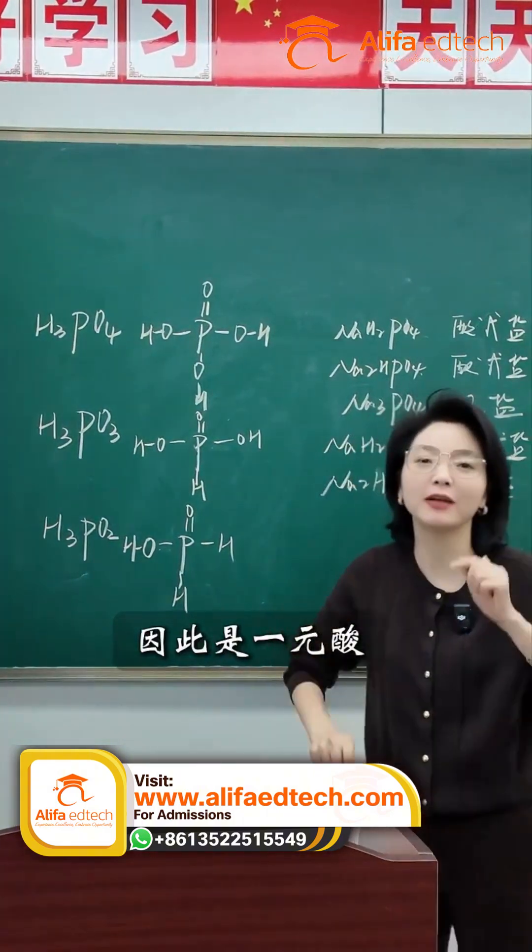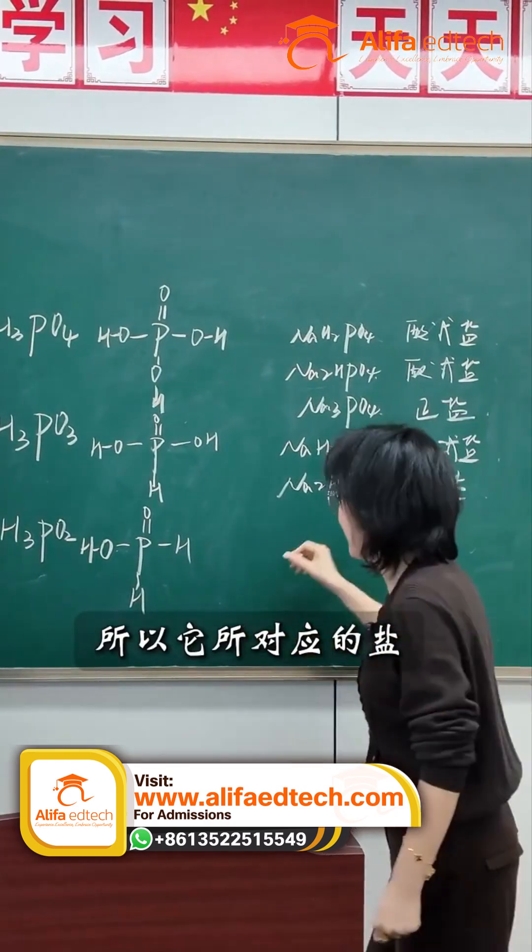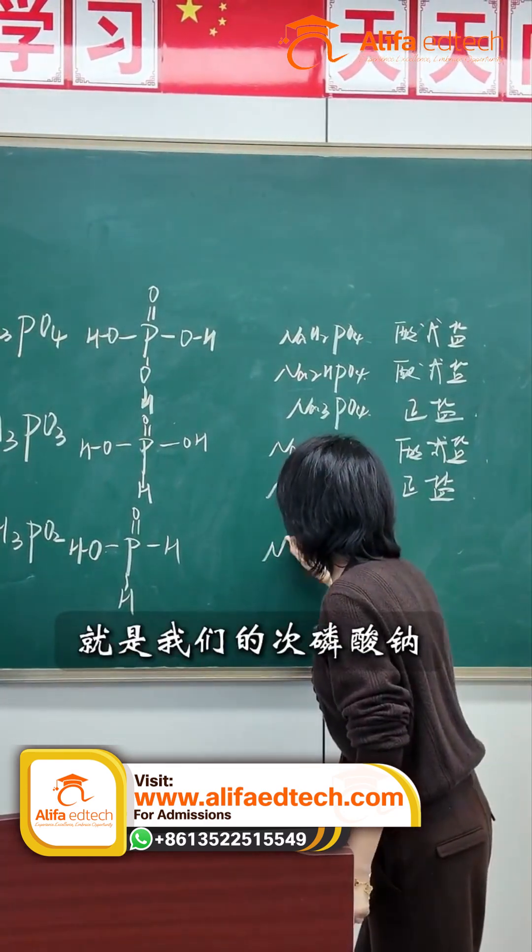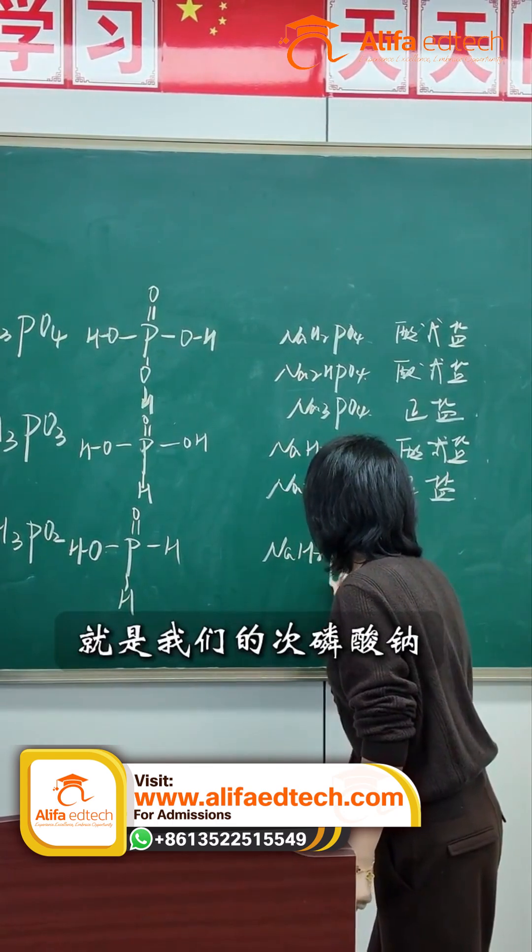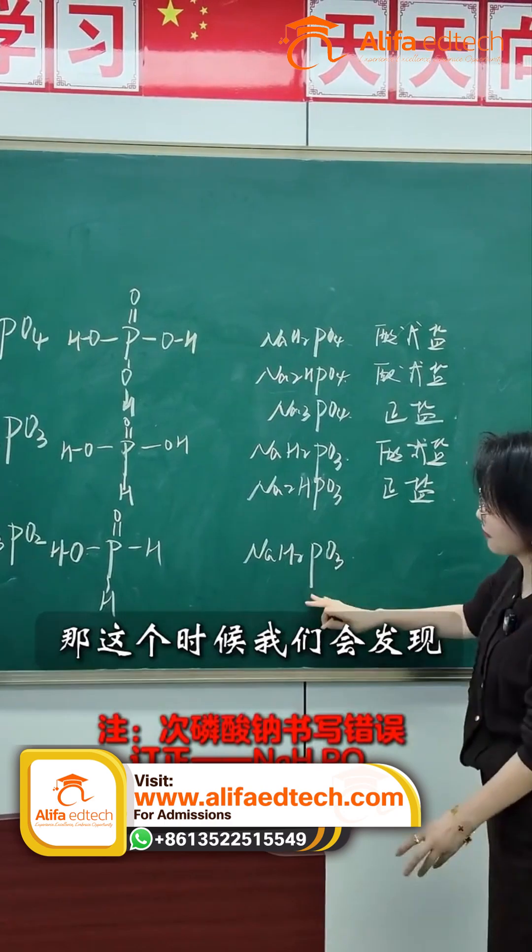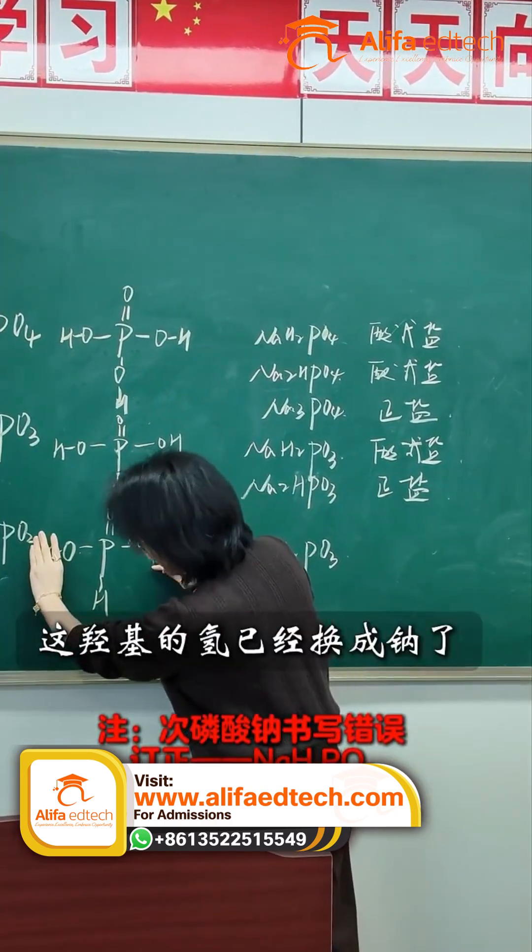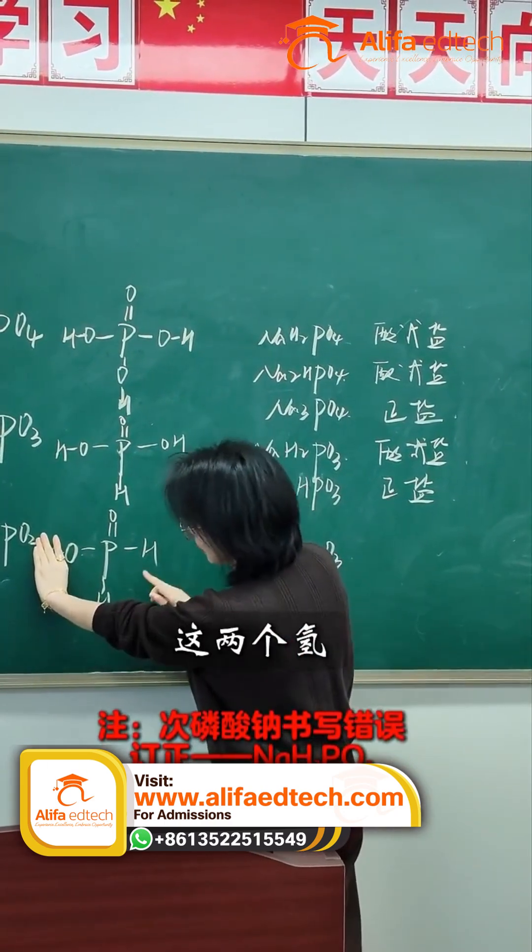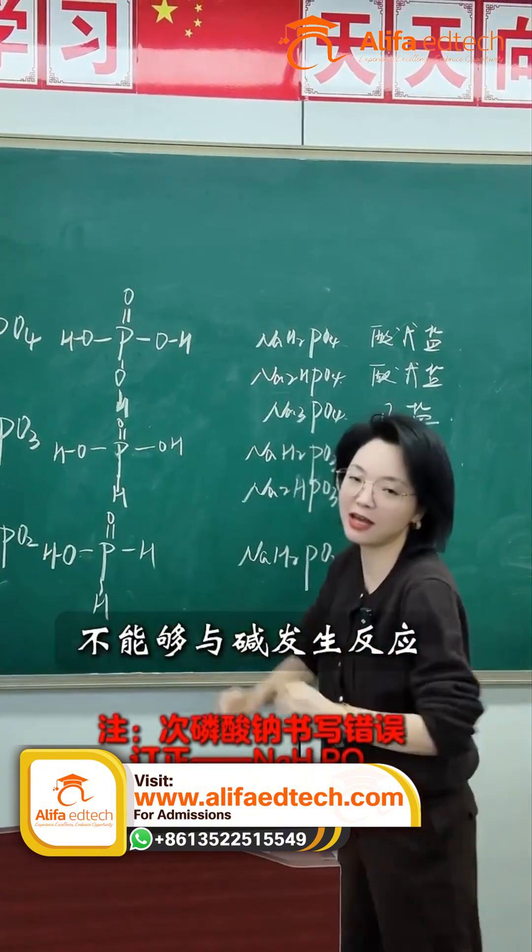Therefore, it's a primary acid. Therefore, the salt he refers to is ours. Sodium tetraphosphate, at this point, will find that the rescue device has been replaced with sodium, leaving only the two hydrogen atoms. These two hydrogen atoms cannot react with the test results, hence the name proof salt.